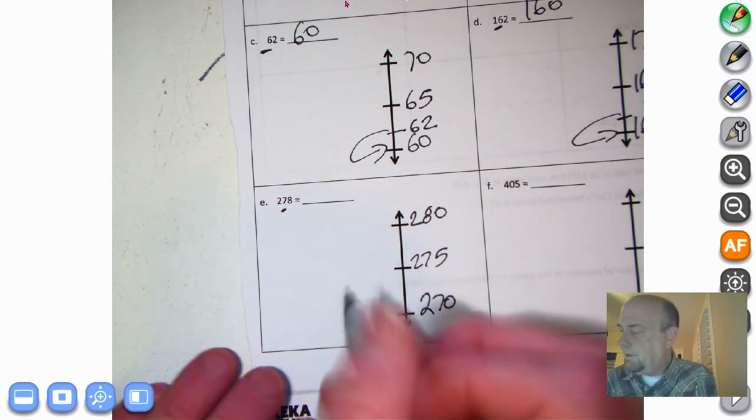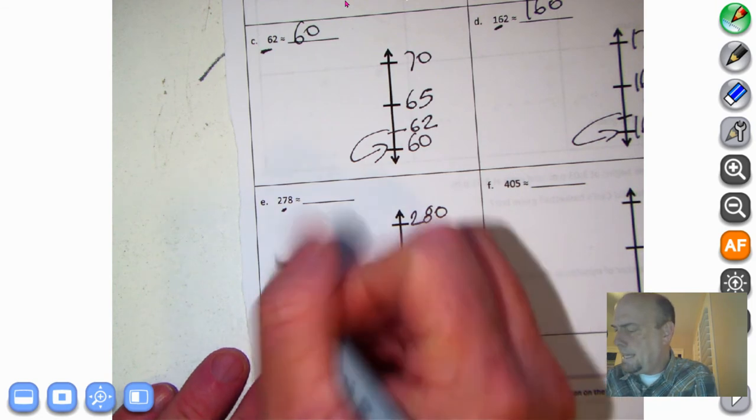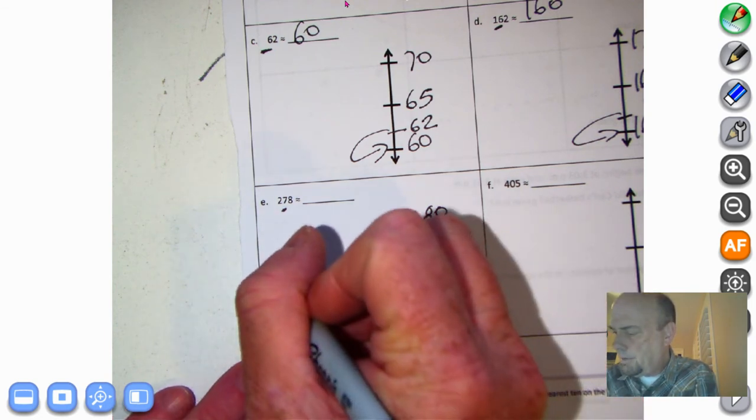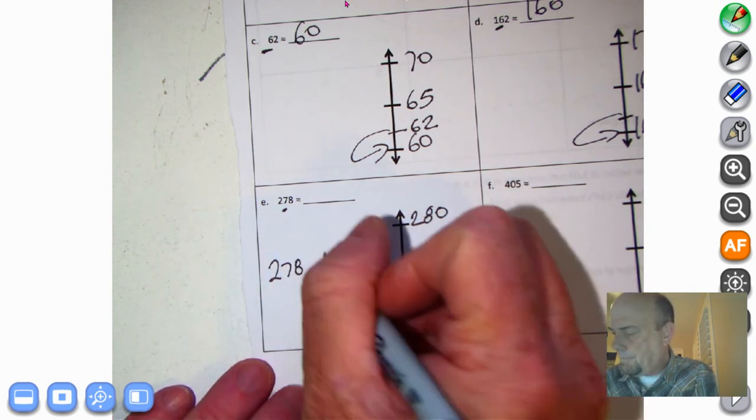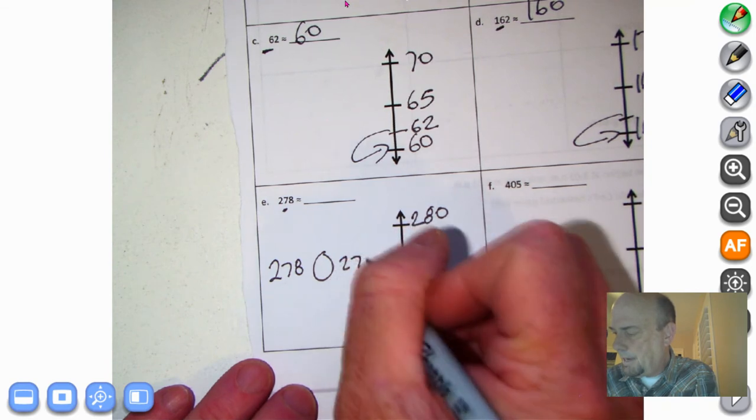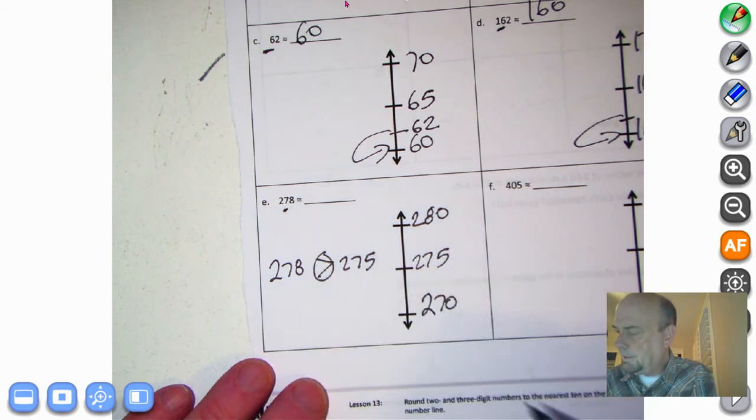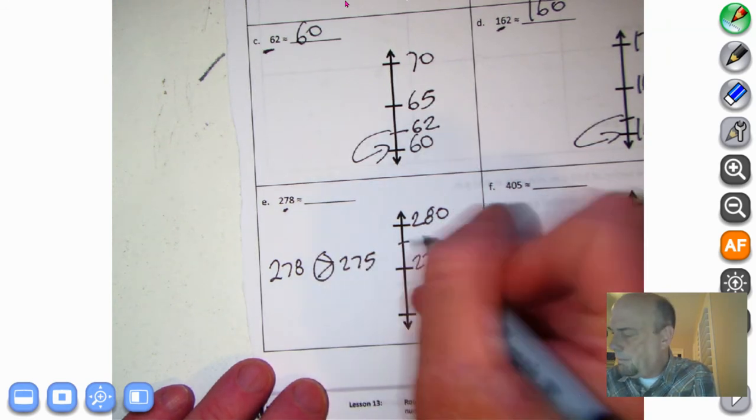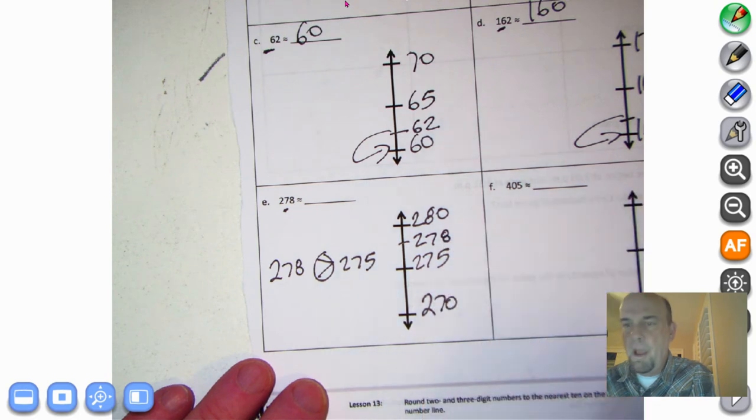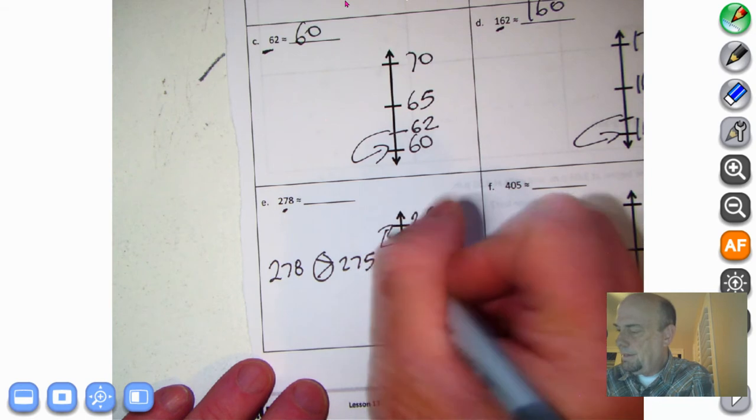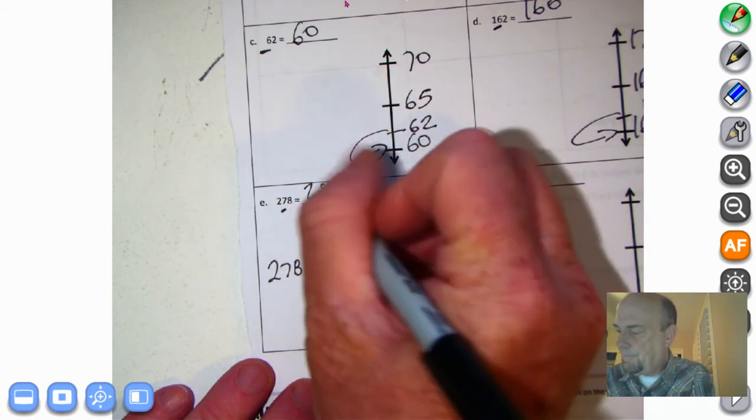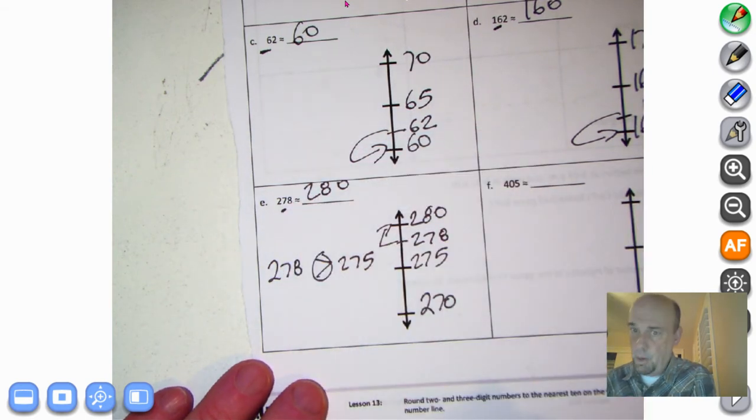Is 278 greater than 275? Let's visit Annie Alligator and find out. 278, 275. What number is greater? Annie Alligator always eats the greater number. So she's going to eat 278. So that means 278 would be up here. And what do we do? What would you do with it? So we round up to 280. Makes sense, I hope.